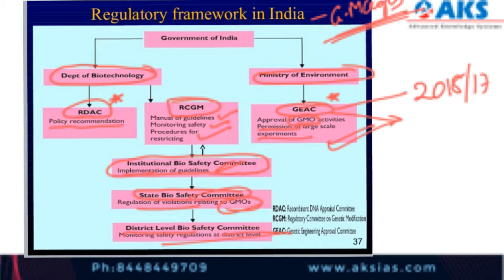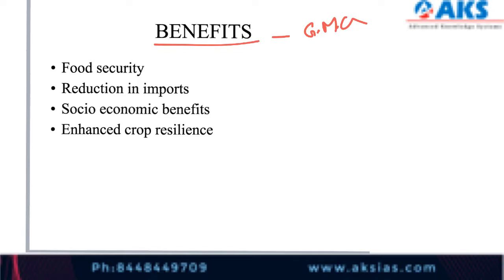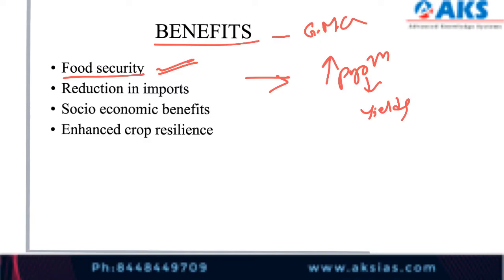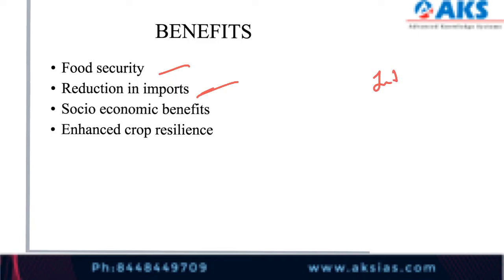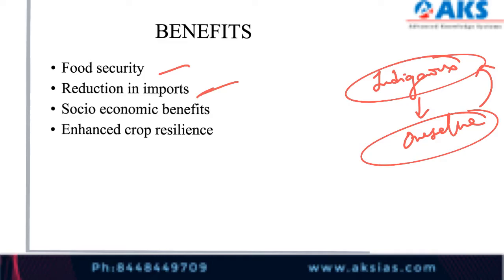Let us see the benefits of genetically modified crops. First is food security — GM crops can feed a rapidly increasing population because they show dramatically increased yields. If we are able to produce a lot of crop in a small area, crop productivity increases significantly. The next benefit is reduction in imports — it is very important for us to be self-sufficient and not depend on others.